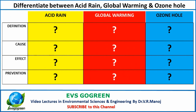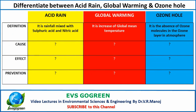We can split this information into the definition, cause, effect, and prevention. The definition for acid rain is rainfall mixed with sulfuric acid or nitric acid which comes down and affects plants, buildings, etc. Global warming is defined as an increase in the global mean temperature, whereas ozone hole is defined as the absence of ozone molecules in the ozone layer of the upper atmosphere.